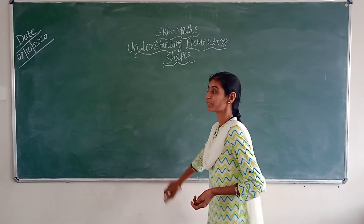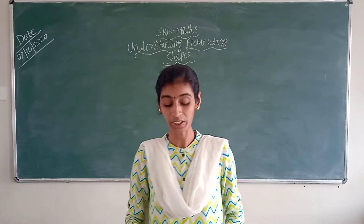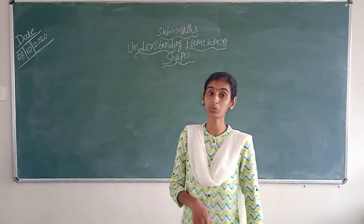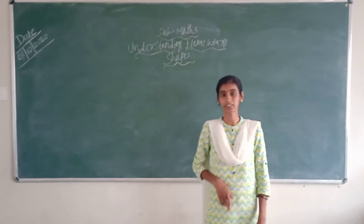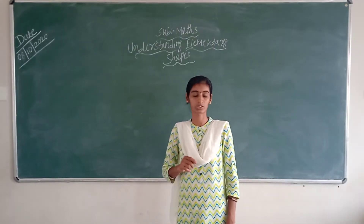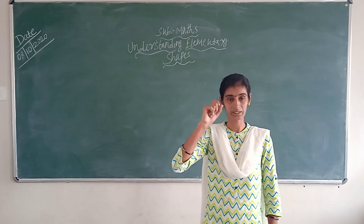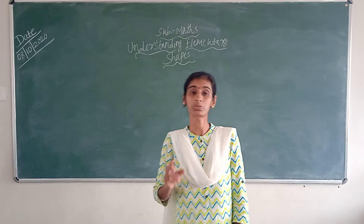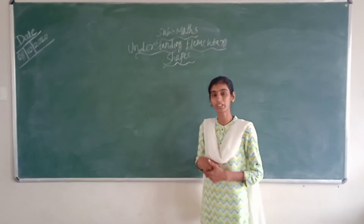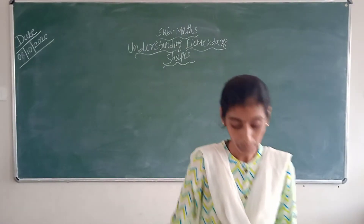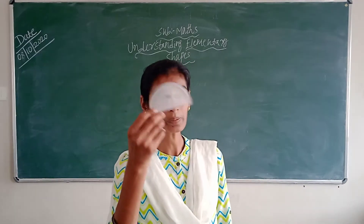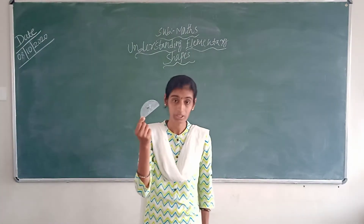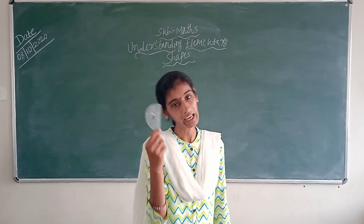And one thing I told you — to measure the angles, we need one instrument. So which is that, children? Can you tell? To draw a circle, what do you need? Yes, you need a compass. So to draw a circle, you need a compass. Those who have it, please take it out and follow along.